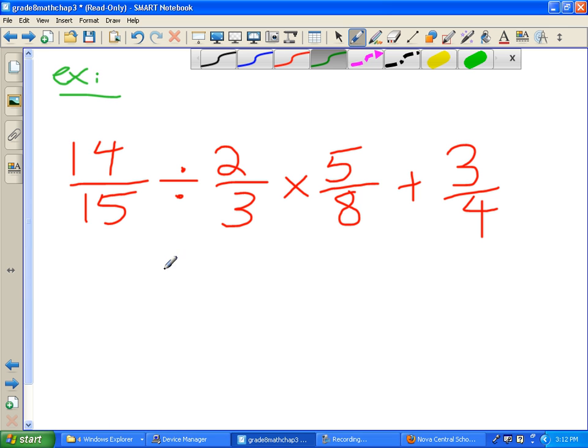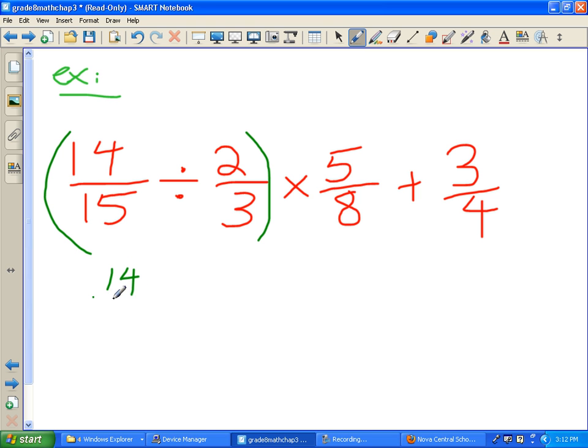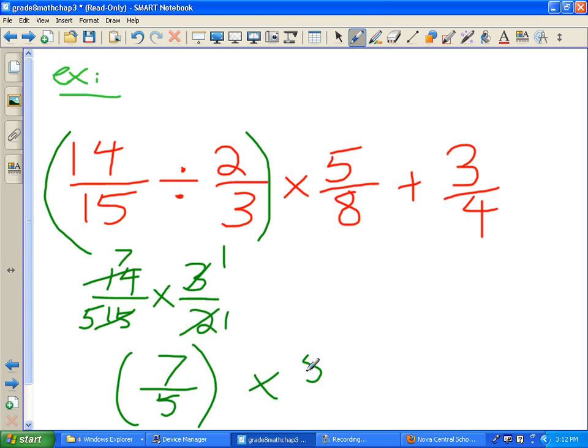In another example, we have division, we have multiplication, and we have addition. So we know division and multiplication come first. So I'm going to do the division part first. So we got 14 over 15, and we're not going to divide a fraction. We're going to multiply the reciprocal or the opposite. Now we can cross-simplify. 2 goes into 2 once. 2 goes into 14 seven times. 3 goes into 3 once. And 3 goes into 15 five times. So now we just multiply the tops and the bottoms. 7 times 1 is 7. 5 times 1 is 5. So all that became 7 over 5. And don't forget what's left. So we go times 5 over 8 plus 3 over 4.